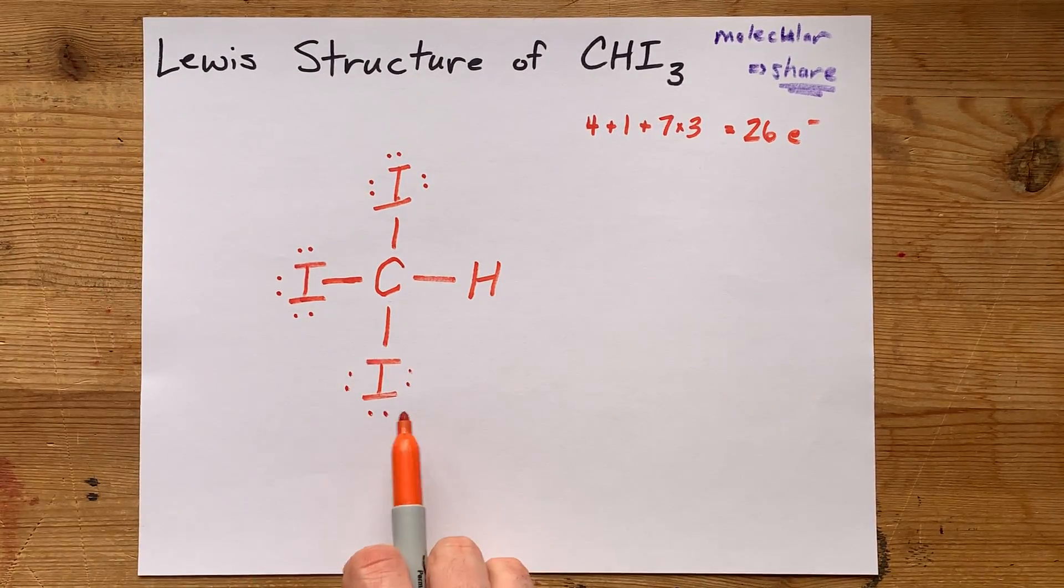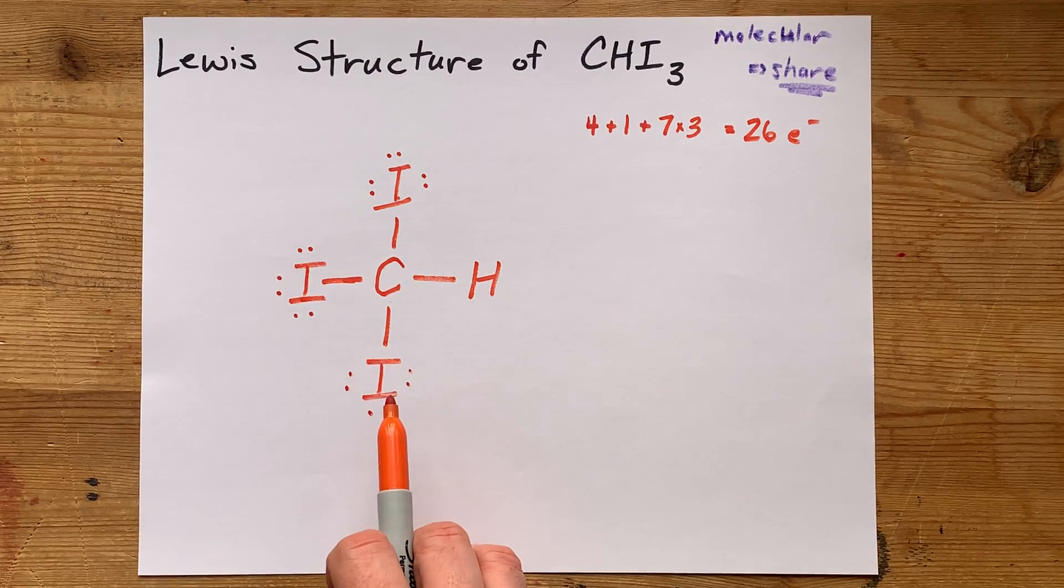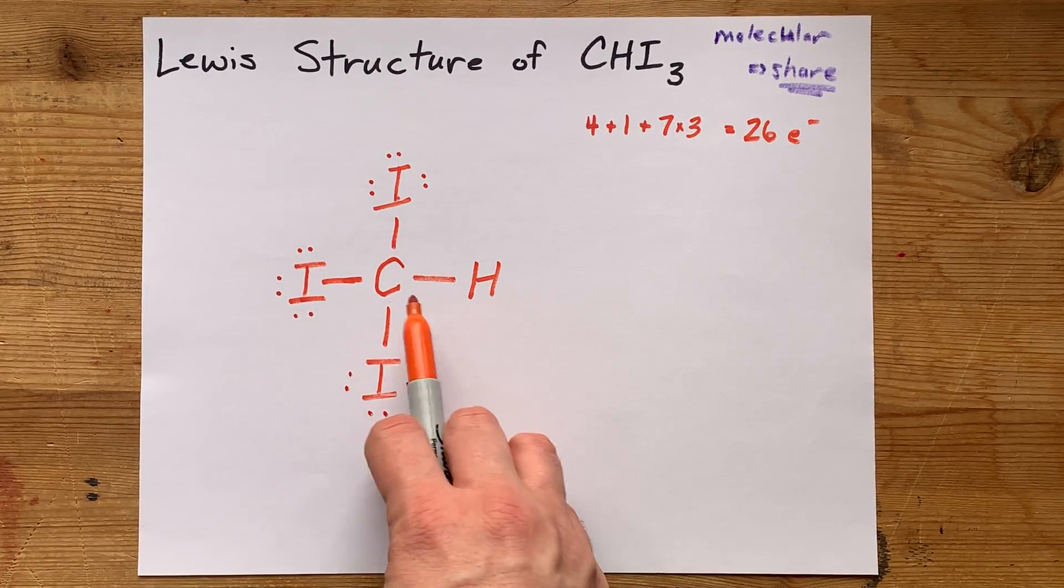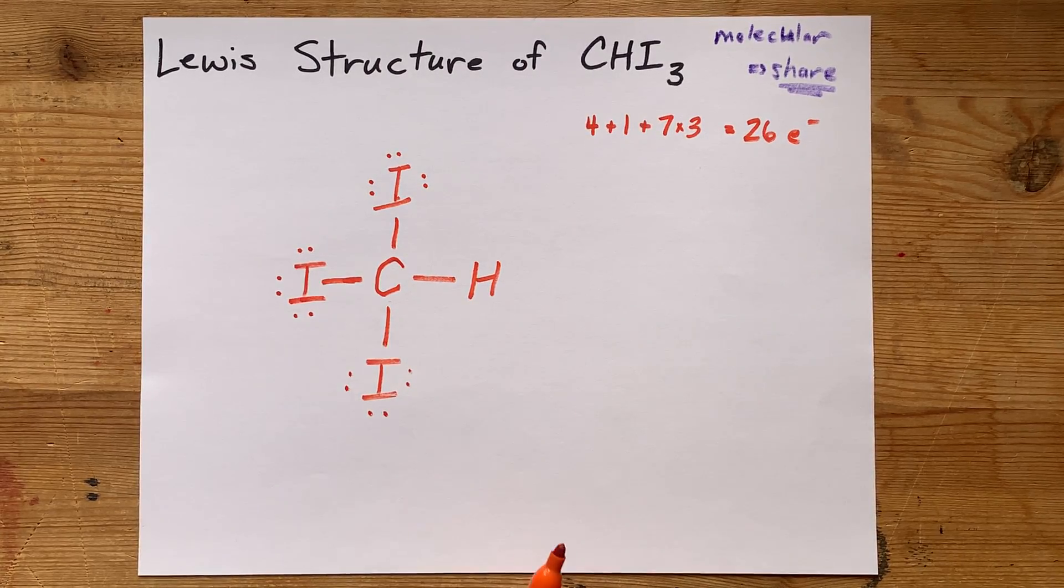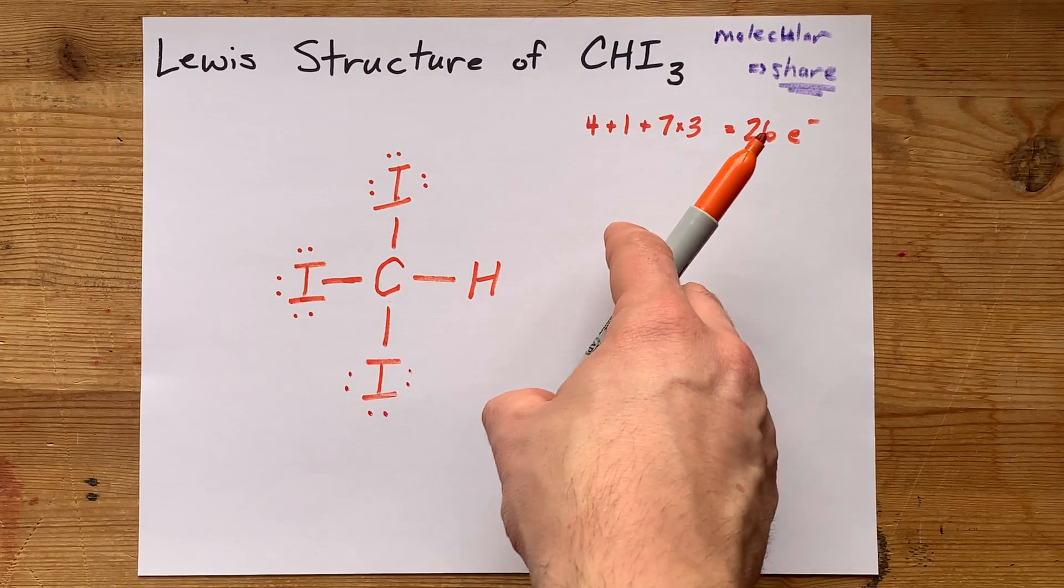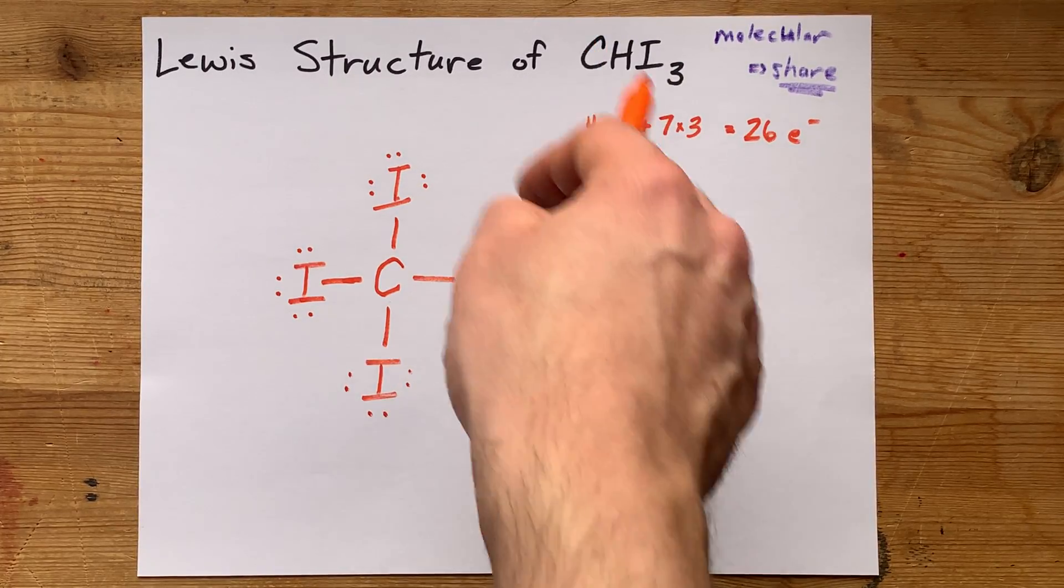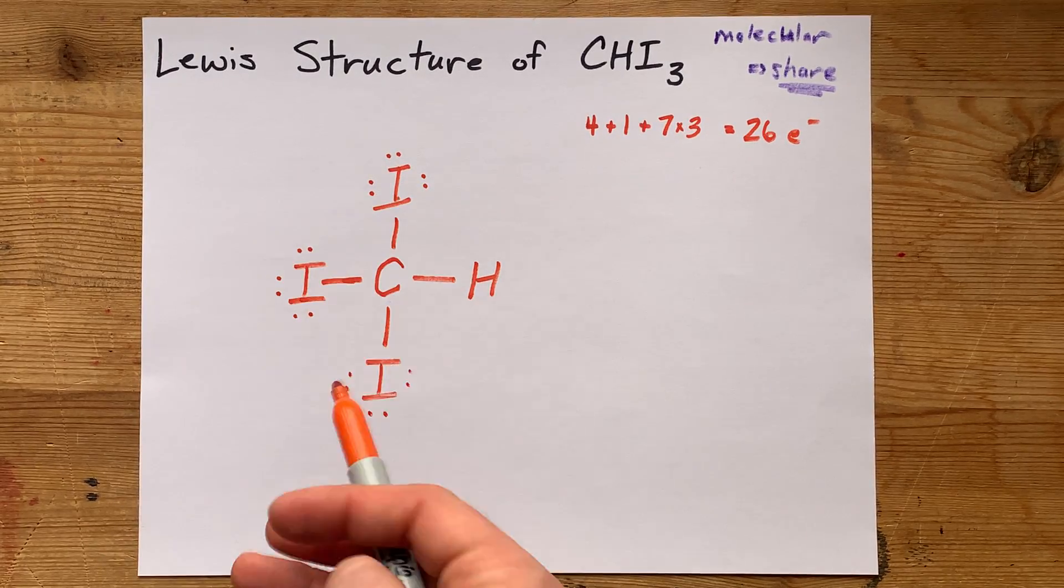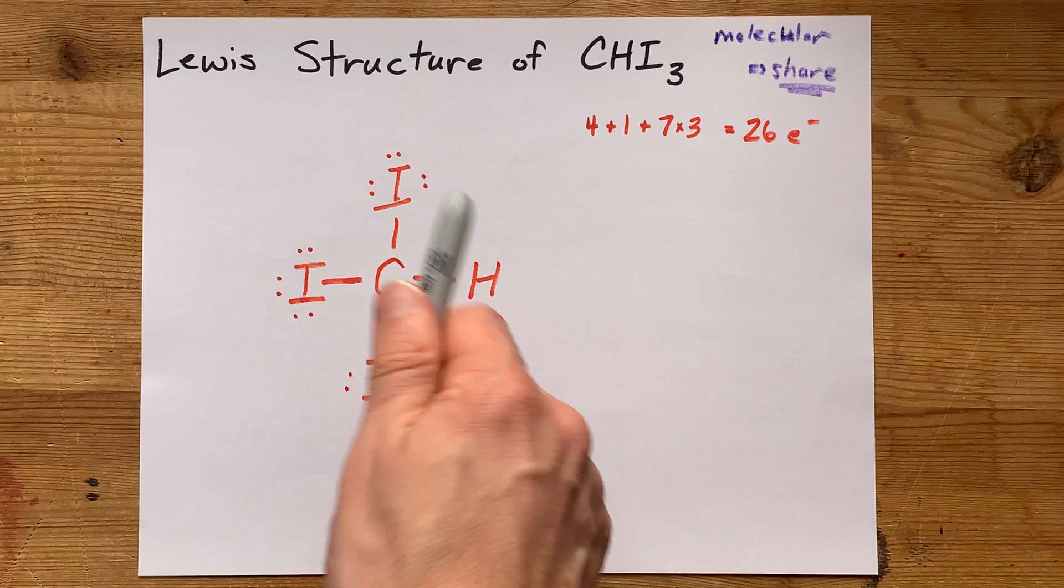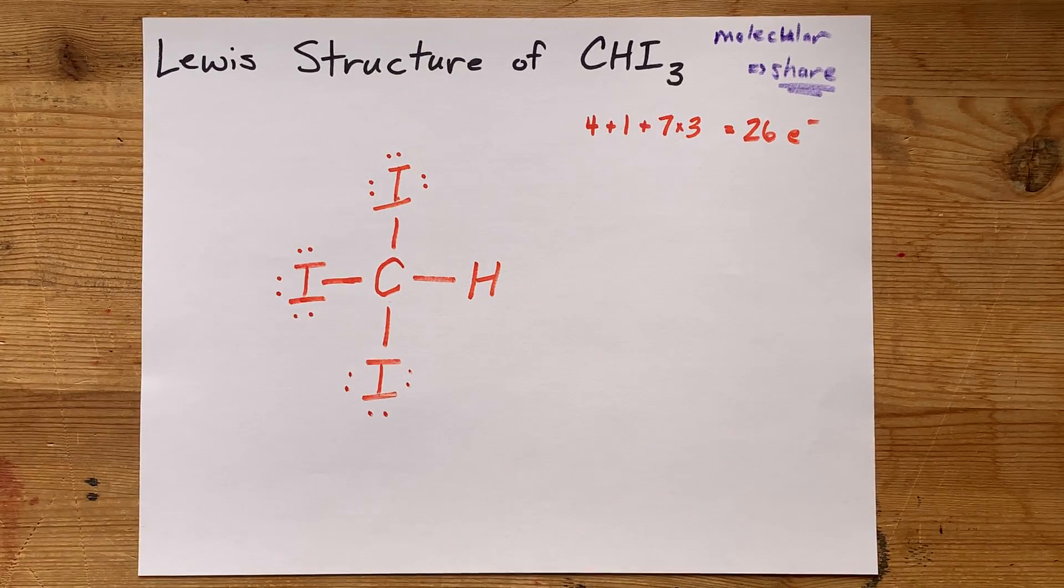That's complete octets for all the carbons and iodines, the correct number of electrons for hydrogen following the doublet rule or two electrons here. And I've used up all the electrons that I brought with me according to the number of valence electrons that each atom brings. This is it. You can't get a better structure than this. You did it with me. Hopefully the process made sense, and best of luck.